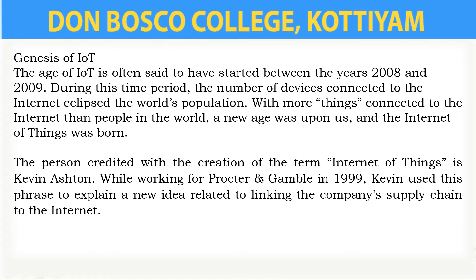There is a famous quote by Kevin Ashton, written in 2009 in a journal: 'If we had computers that knew everything there was to know about things — using data they gathered without any help from us — we would be able to track and count everything, and greatly reduce waste, loss, and cost. We would know when things needed replacing, repairing, or recalling, and whether they were fresh or past their best.'